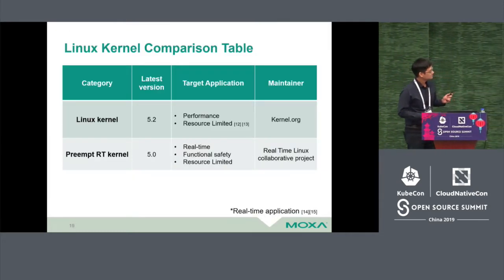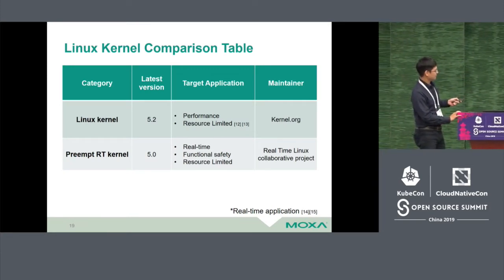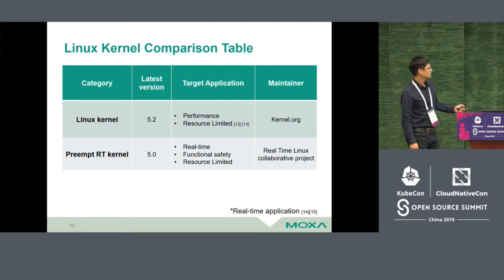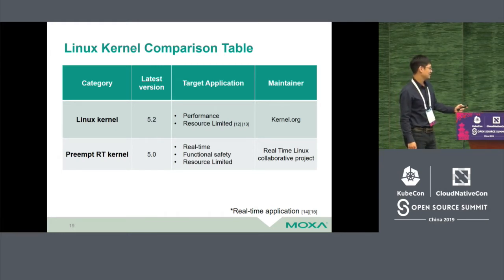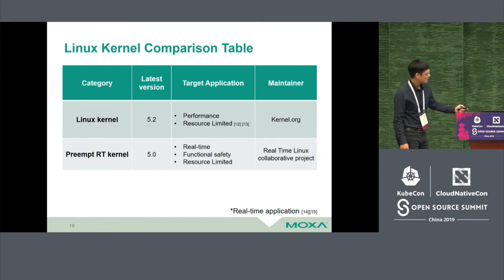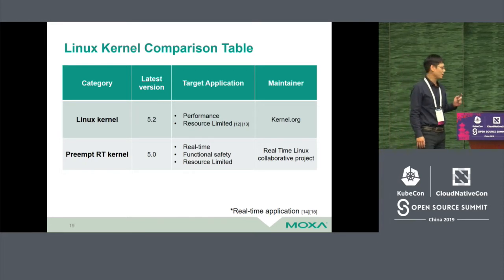For the kernel, there are two main options. The first is the Linux kernel and the second is the preemptive RT kernel. The Linux kernel is typically suitable for performance and resource-limited target applications. Before maybe 10 years ago, resource-limited applications usually used uClinux, but now the Linux kernel supports no-MMU architecture and tiny kernel configurations, so we can use Linux in resource-limited platforms. For real-time applications, the preemptive RT kernel is suitable for real-time, functional safety, and resource-limited targets. References include Xenomai or RTAI.